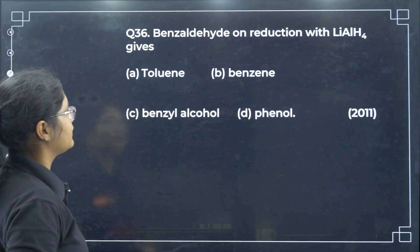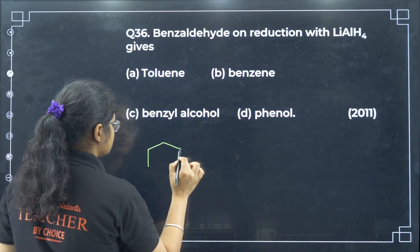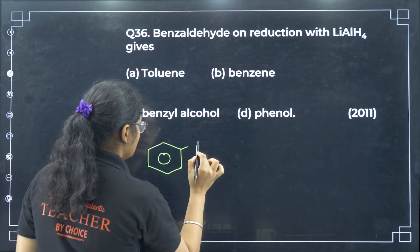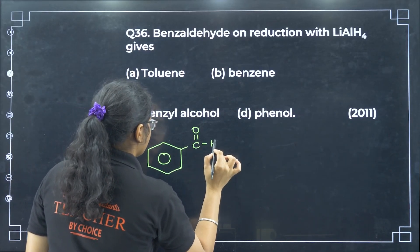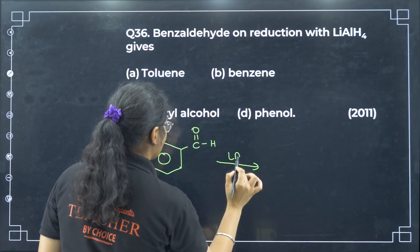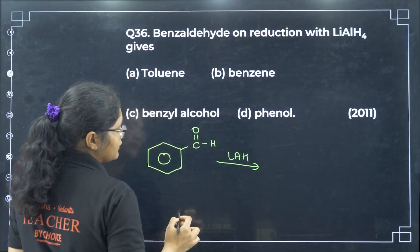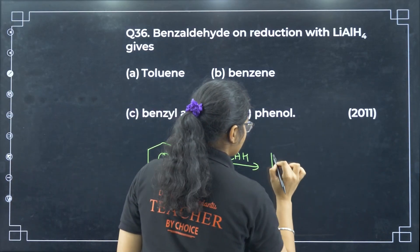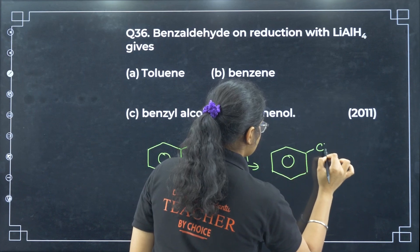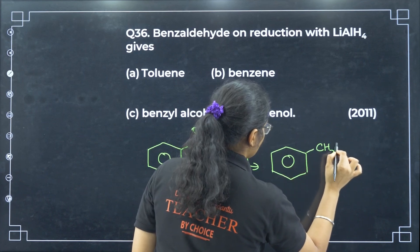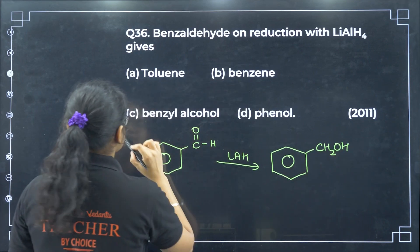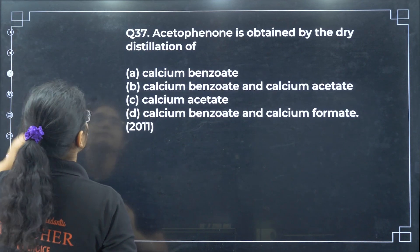Benzaldehyde on reaction with LiAlH4: lithium aluminium hydride reduces benzaldehyde, converting the aldehyde group to an alcohol group. So we get CH2OH — that is benzyl alcohol, option C.